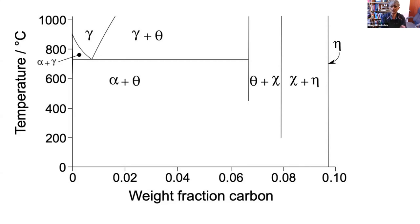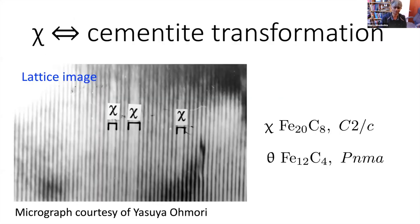When we temper low-carbon martensite, we can go through a series of precipitation reactions in which those carbides which are easier to nucleate form first and eventually are replaced by cementite in the tempering sequence. The temperatures at which we temper martensite — ignoring secondary hardening — are simply too low to allow substitutional atom diffusion or iron atom diffusion. To get a transformation that minimizes strain energy, you would need the iron atoms to diffuse to accomplish the structural change.